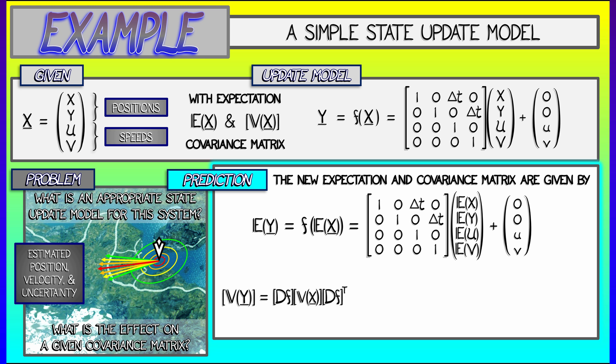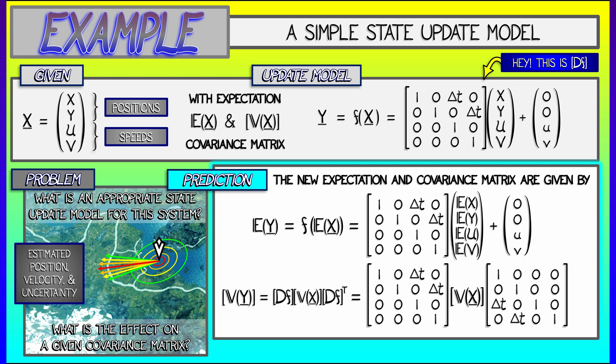The covariance matrix v of y is obtained from v of x by multiplication on the left and right by the derivative of f, either regular or transpose on the right. And oh look, that derivative is really just built right into the state update model because it is linear plus a constant.